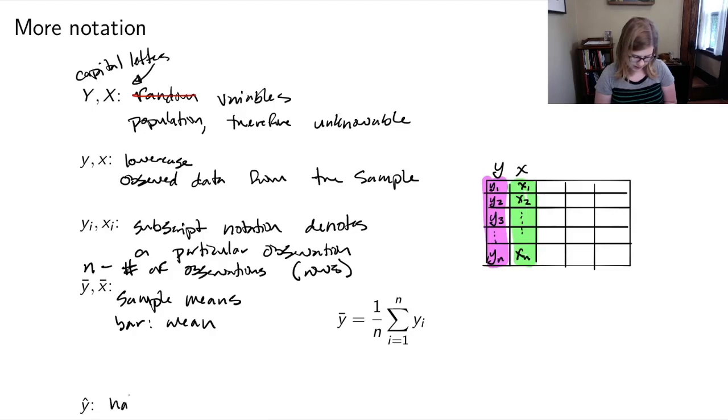And then the last thing down here at the bottom is Y hat. And hat means a fitted or predicted value. So that's a model output.